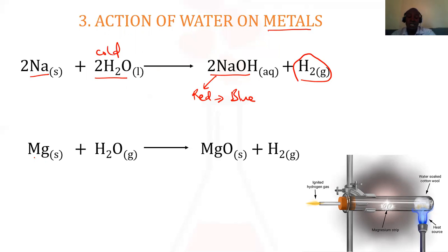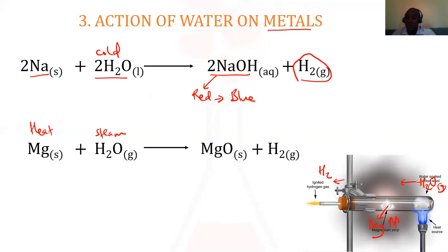Some metals are less reactive than sodium and potassium, so we need to heat them in the presence of steam. For example, magnesium is heated while cotton wool soaked in water is also heated nearby, producing steam that reacts with the magnesium to form magnesium oxide and hydrogen gas. The hydrogen gas passes through and can be burned off, while the magnesium oxide remains as a white powder.